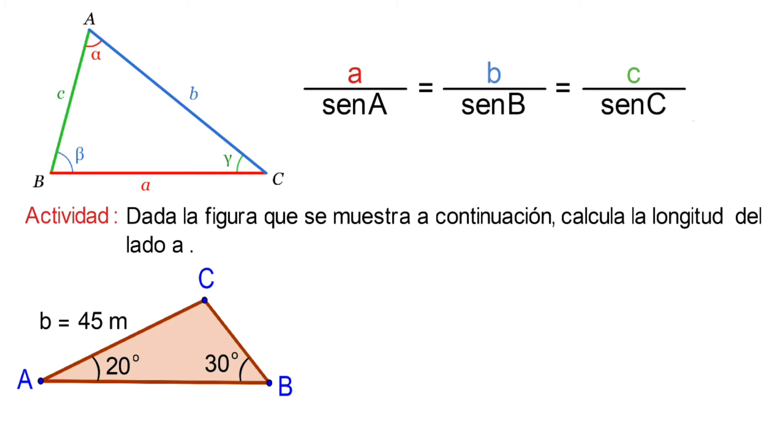Luego comenzaremos por identificar a cada uno de ellos en relación al teorema del seno. Tenemos la amplitud del ángulo B y la longitud de su lado opuesto, entonces corresponde al cociente.